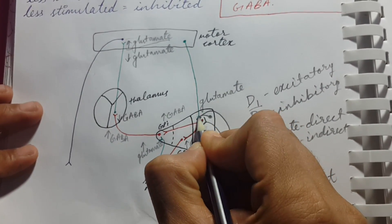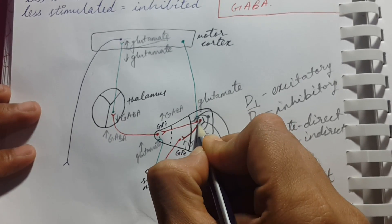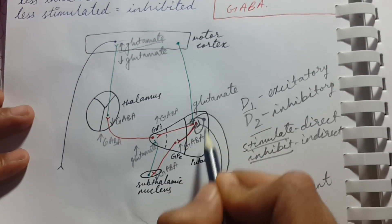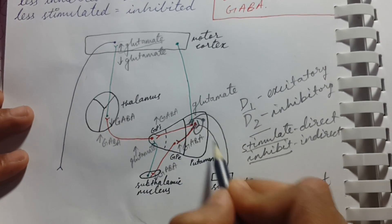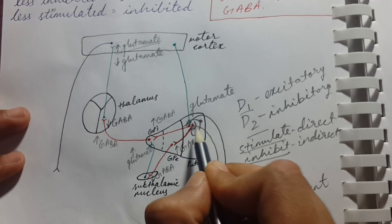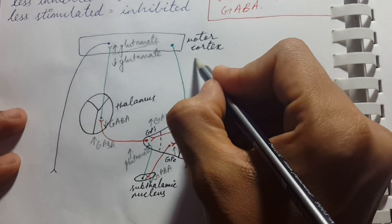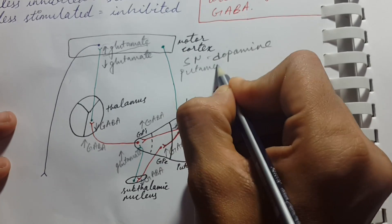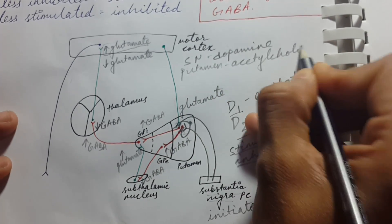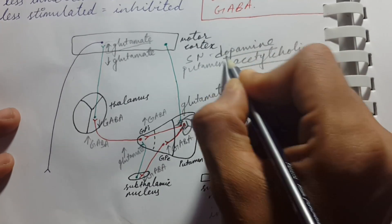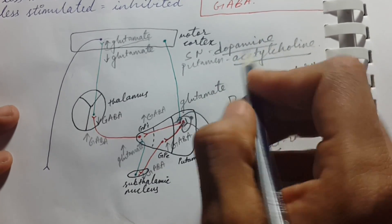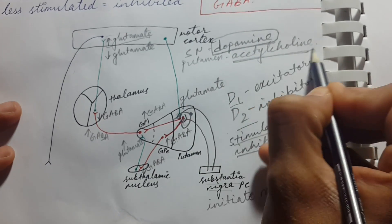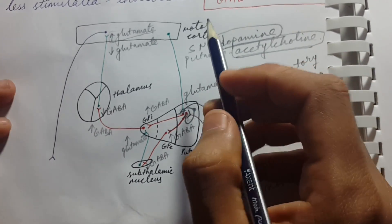Within the putamen, there are fibers that release acetylcholine at the same site where substantia nigra releases dopamine. These fibers have exactly the opposite effect of dopamine: dopamine increases movement while acetylcholine decreases movement. This is why in Parkinson's disease — where dopamine is deficient — we either give dopamine to restore movement, or we give anticholinergic drugs to block acetylcholine and allow movement to occur.